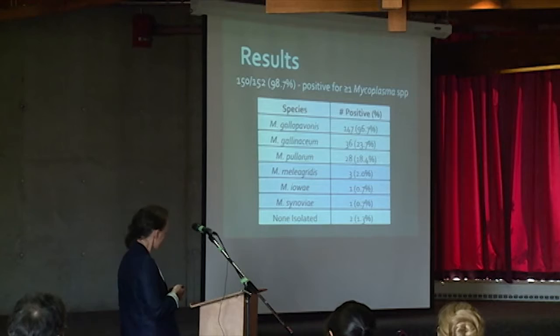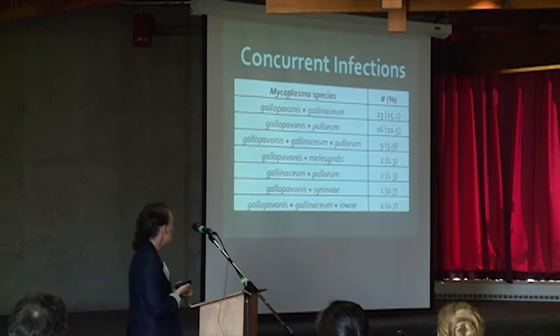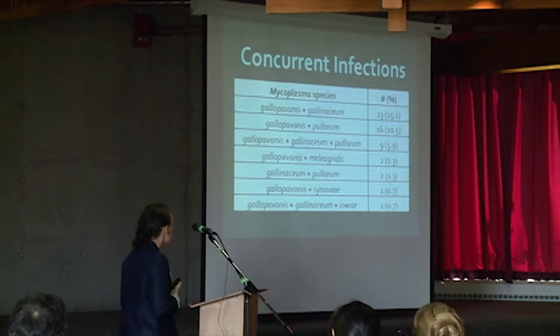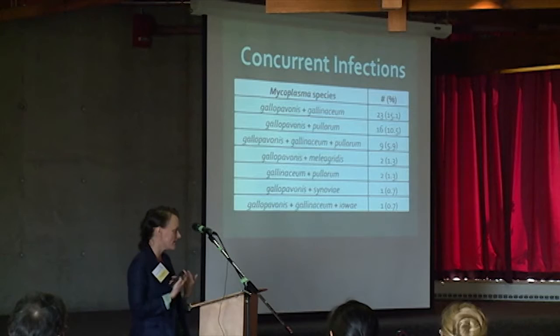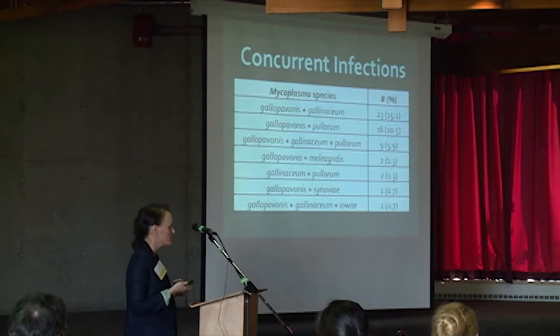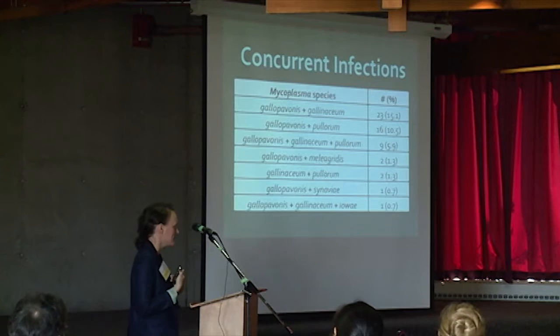We also found a large number of co-infections. In 23 of our birds, we had Gallopavonus and Gallinaceum present together; in 16, we had Gallopavonus and Pullorum together. These co-infections are really important because it's known that they can produce synergistic effects — even non-pathogenic mycoplasmas put together can produce pathogenic effects. For example, Meleagridis and Synoviae together can produce sinusitis in turkeys, and Meleagridis and IOA together can cause much more pronounced air sac inflammation than either one alone.